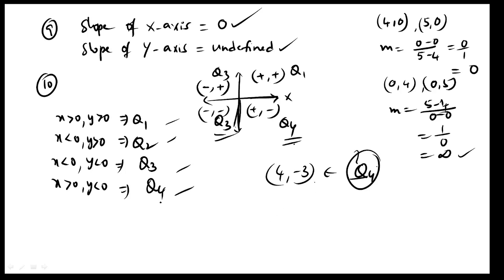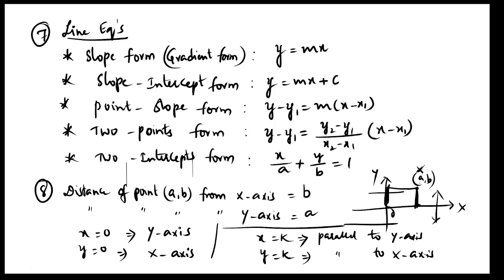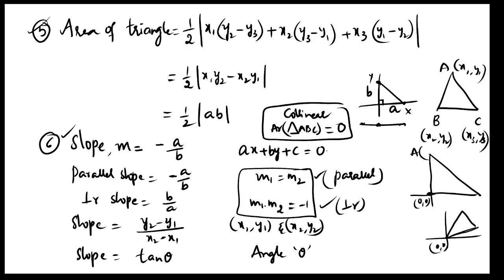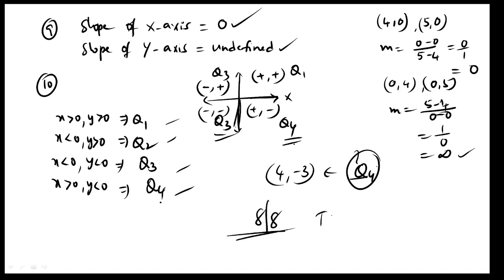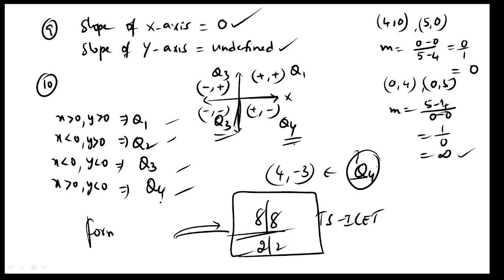We can see slope, distance, area of triangle, and section — total 8 questions in this topic. TSI set has 2 questions, AP set has 2 questions. If you practice all 8 out of 8 marks, TSI and AP mathematical ability syllabus is the same. 2 questions is also achievable if practice is done.